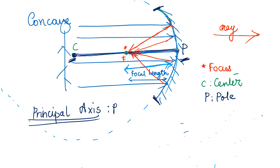If you note that when you have parallel light rays hitting the mirror, they will meet the reflected rays at the focal point. The reflected rays all converge at one point, and those rays are parallel before hitting the mirror. This is the concave mirror with various details.